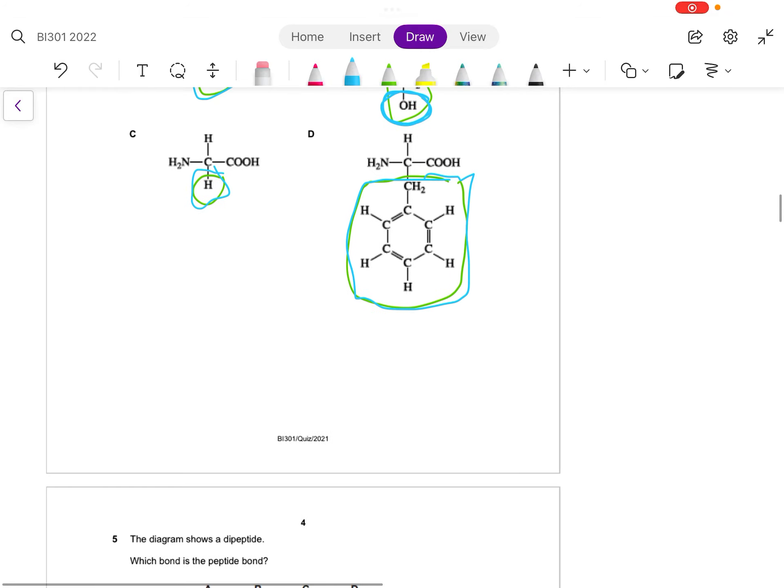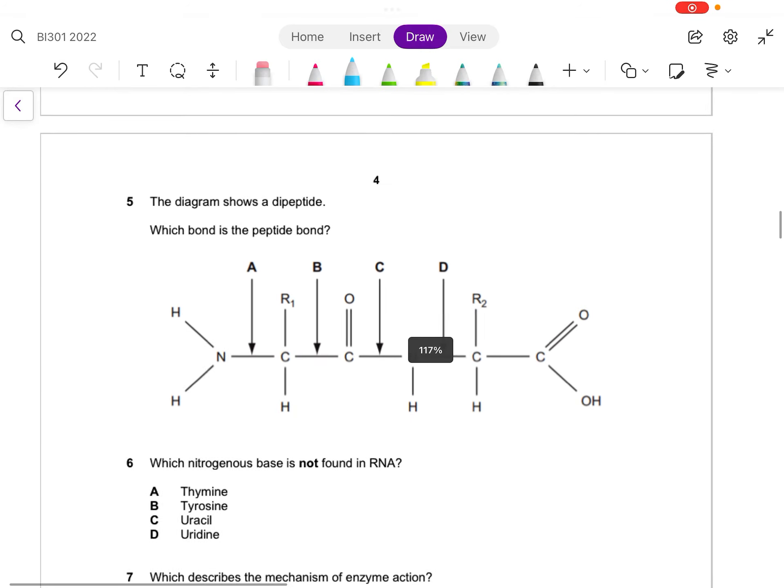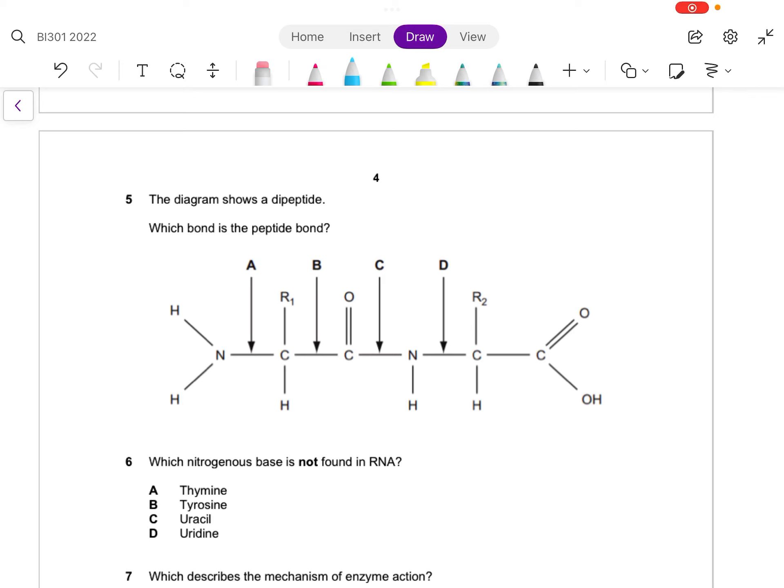Let's go to question five. Question five shows a dipeptide. When we say it's a dipeptide, that means it's made up of two amino acids. Which bond is the peptide bond? So we look across the board - this one over here is C double bond O with an NH, that is the peptide bond.